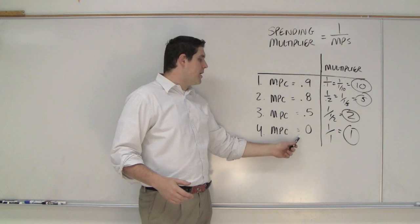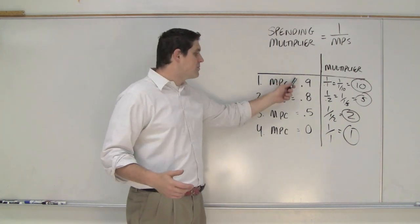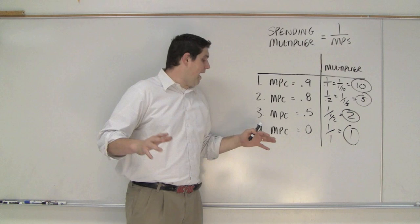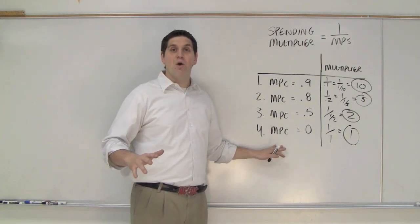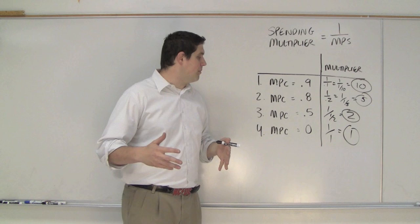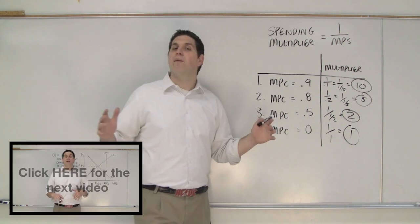As you decrease the amount people spend, in other words, increase the amount people save, that means the spending multiplier has less of an effect. So, in fact, if the marginal propensity to consume is zero, and people save every dime, when there's an increase in spending in the economy, it has no ripple effect whatsoever, the multiplier would actually be 1. Hopefully it makes sense.